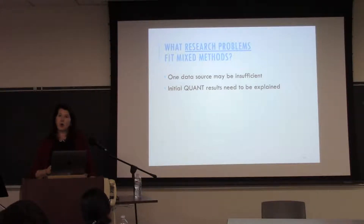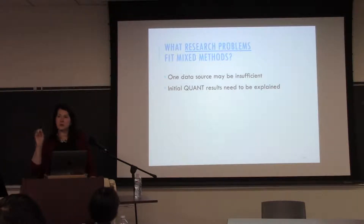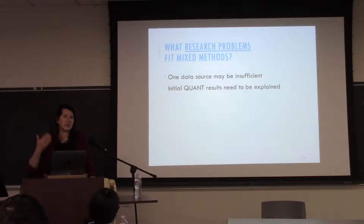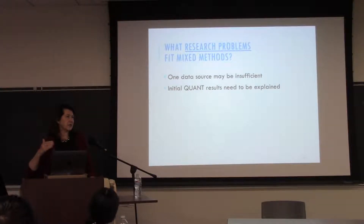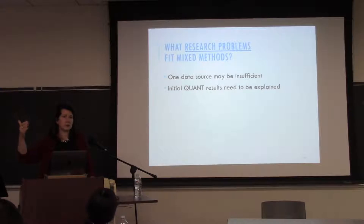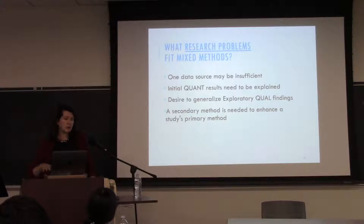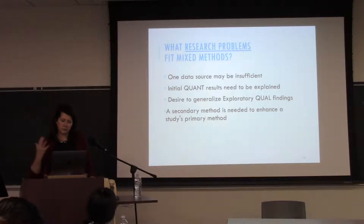Sometimes researchers have gathered qualitative evidence and then want to show how often something happens or how prevalent it is, so they follow up with a quantitative study. They don't want to say 'this was true for the 15 people I interviewed' — they want to generalize. It's often the secondary method to enhance the primary method, used when the researcher realizes they can't understand what they want to without doing it this way.